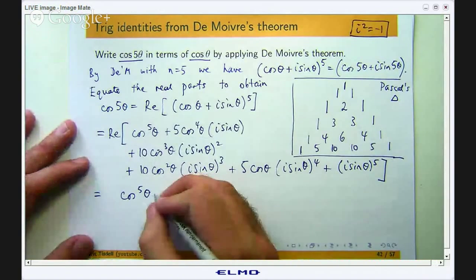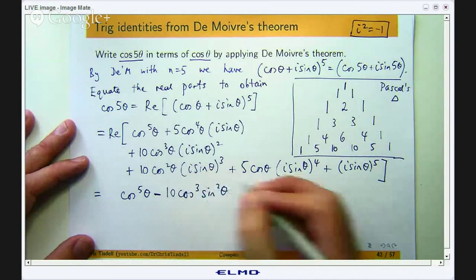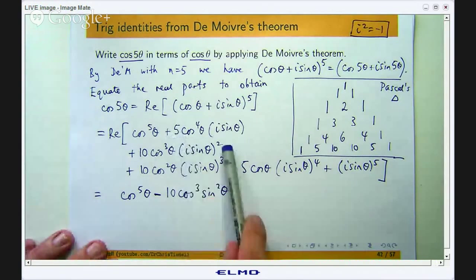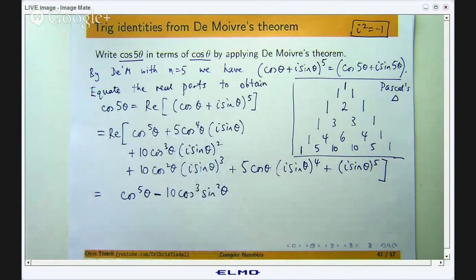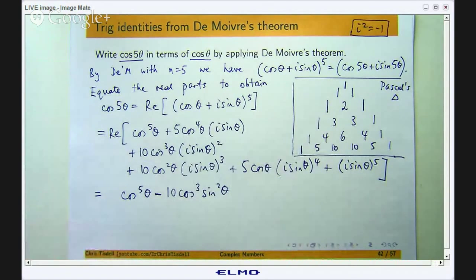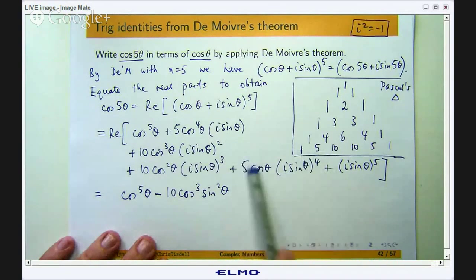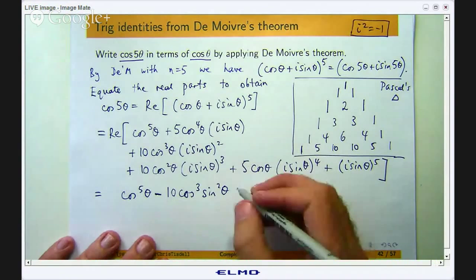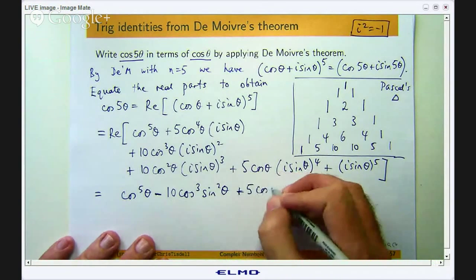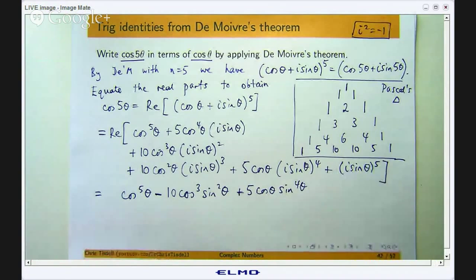So I will get, that will definitely be in the real part here. We are moving on. That is going to be an i cubed. Now, i cubed will be negative i, so that is not going to be real. What about this one? Well, i to the power of 4, that is i squared times i squared, negative 1 times negative 1, so the i's are going to disappear, so that is definitely going to be real. So I am going to get 5 cos θ sin to the power of 4 and over here I am going to get i to the power of 5. Well, that is going to leave me with some sort of i, so that again will not be real.